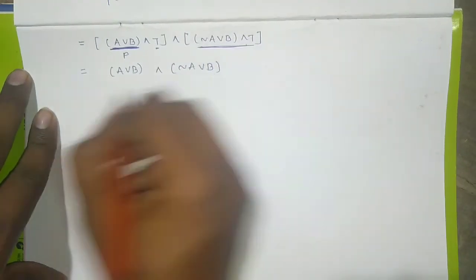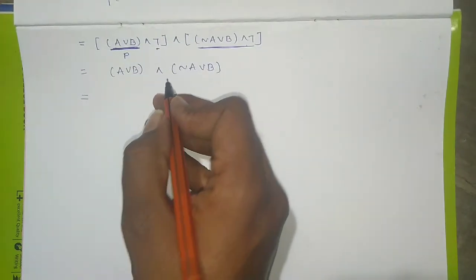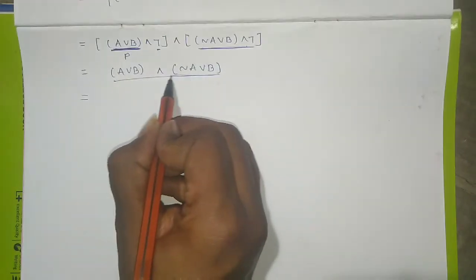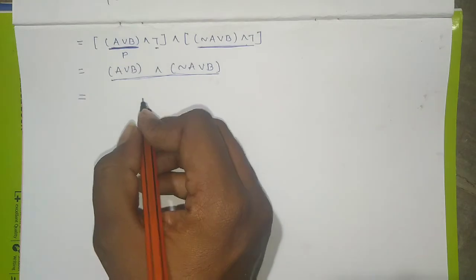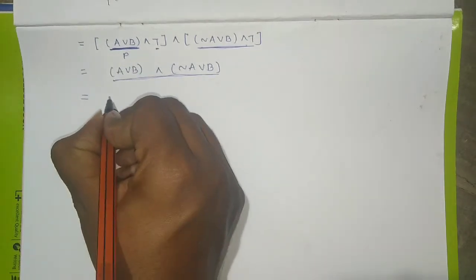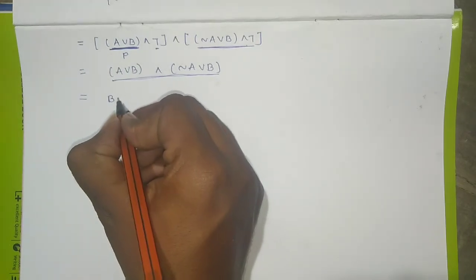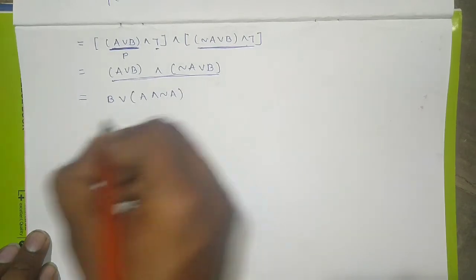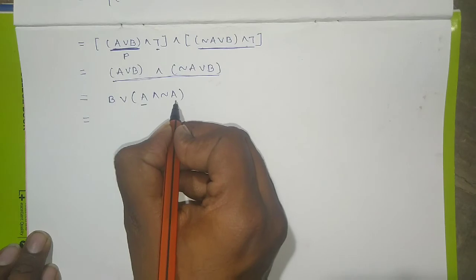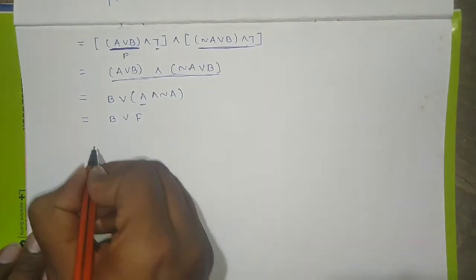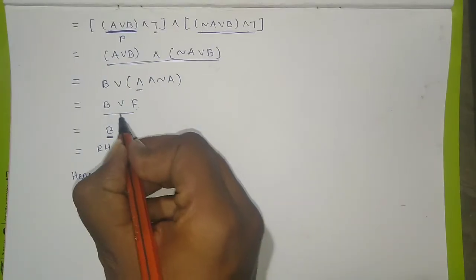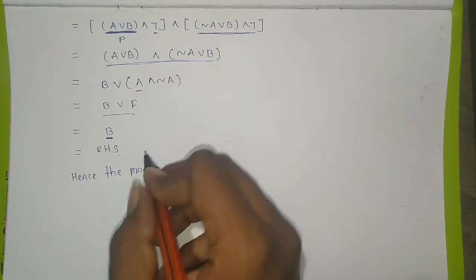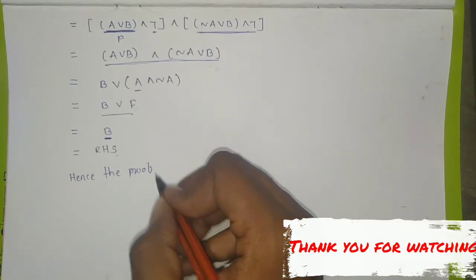We apply the reverse distributive law here. As we know, A AND-ed with its negation gives false (F). Since B is already with F, we are getting F, which is nothing but our RHS. So this is proved. Thank you for watching.